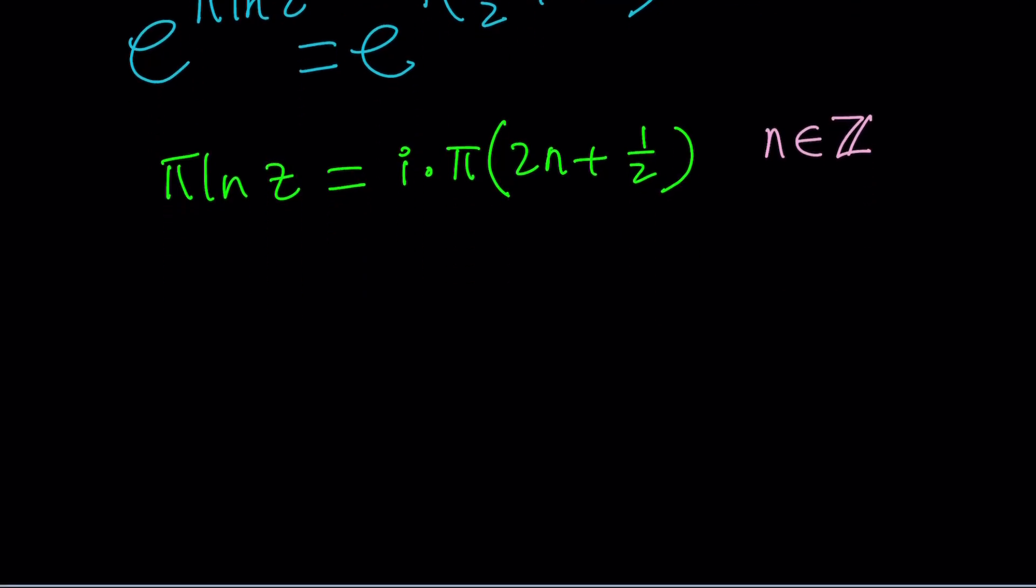And to solve for z, let's solve for ln z. ln z. Wait a minute. I can cross out the π's and get ln z directly from here. i times 2n plus 1 half. At this point, you can go and replace n with 0 if you want just to get a simple answer.